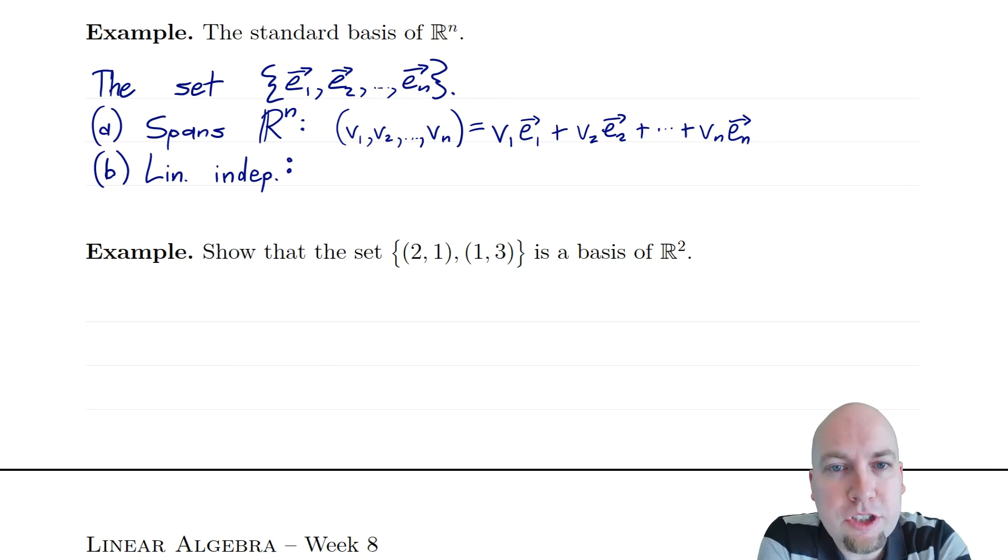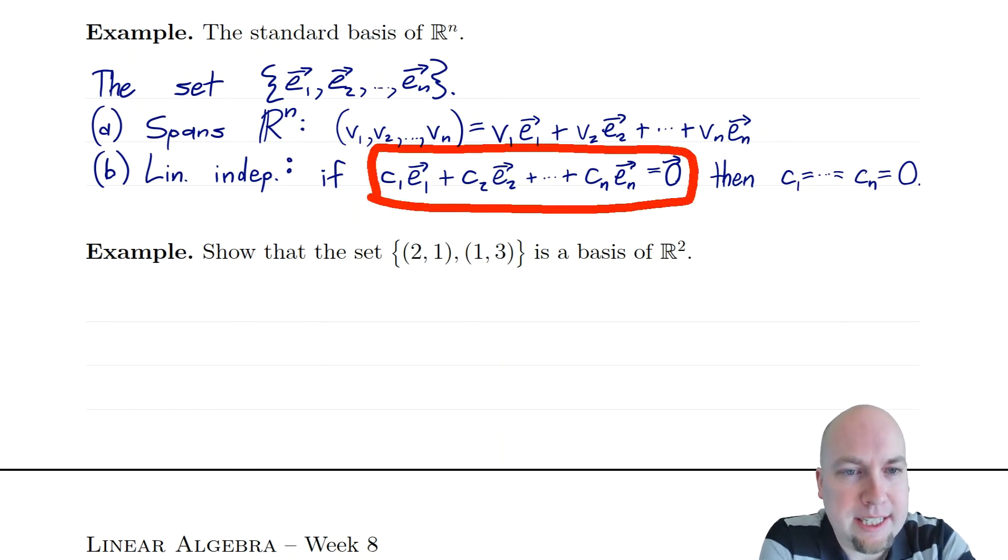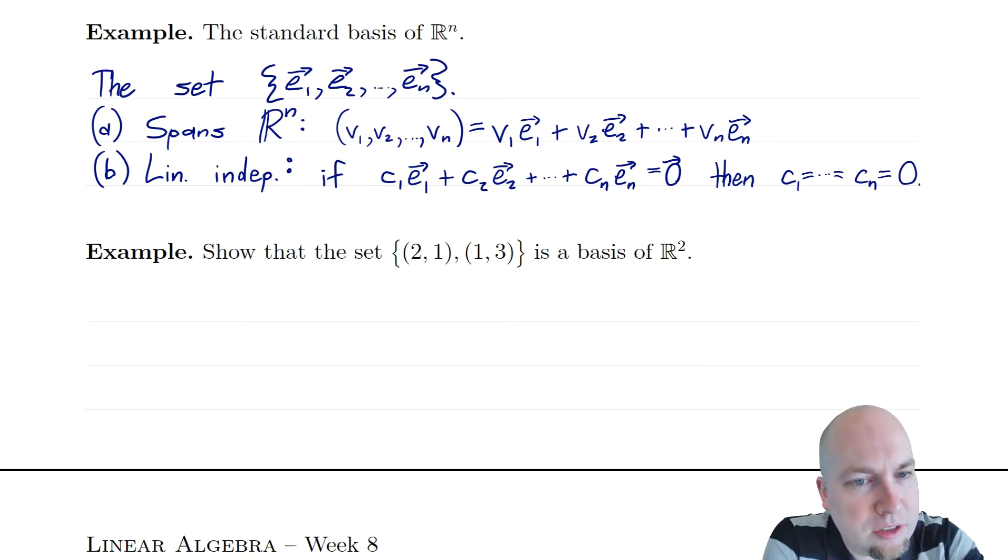We want to show that the only linear combination of these guys that gives us zero is the zero linear combination. In other words, we want to show that this implies each c has to be zero. But if you just write out what this vector on the left here is, its first entry is c1, its second entry is c2, and so on down the line, its last entry is cn. And those are all equal to zero. So yeah, each of the coefficients are zero. So yes, this really is a basis because it satisfies both of those properties there.